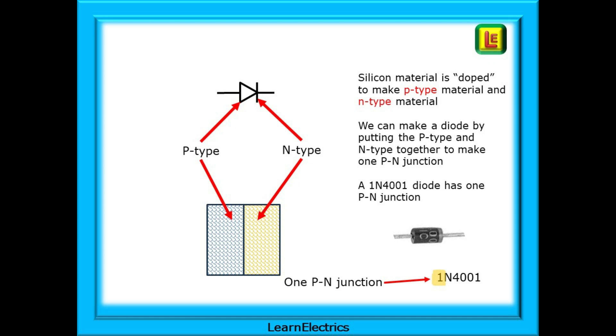And we can make a diode by putting the P-type and N-type together to make one P-N junction. A 1N4001 diode is shown here. It has one P-N junction. The diode number begins with the number 1, indicating just one P-N junction.